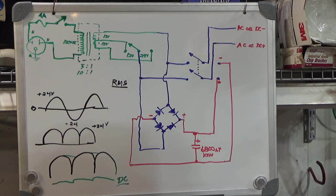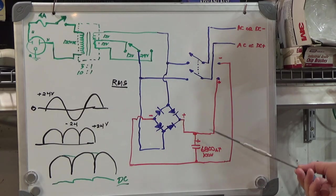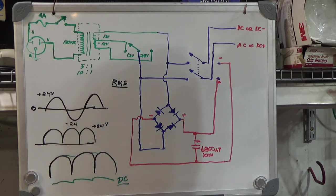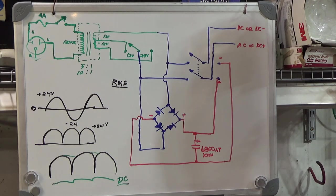This is called a linear supply. If you wanted to make this less ripply on the output, you could either add more capacitors or you could put a regulator in there. We won't go into the details on that. But if anyone has questions, you can always email me or text me and I'll be happy to answer them.